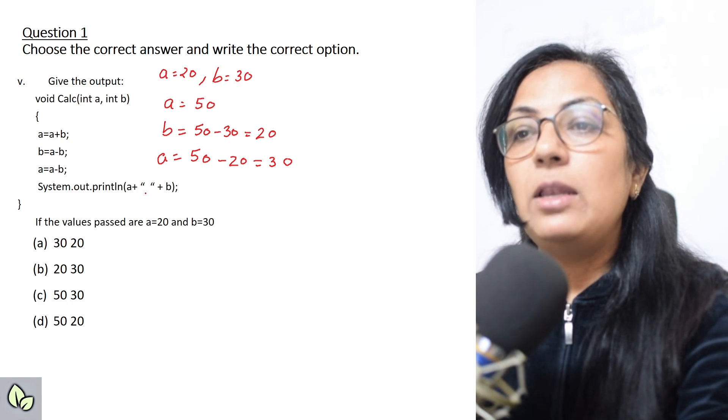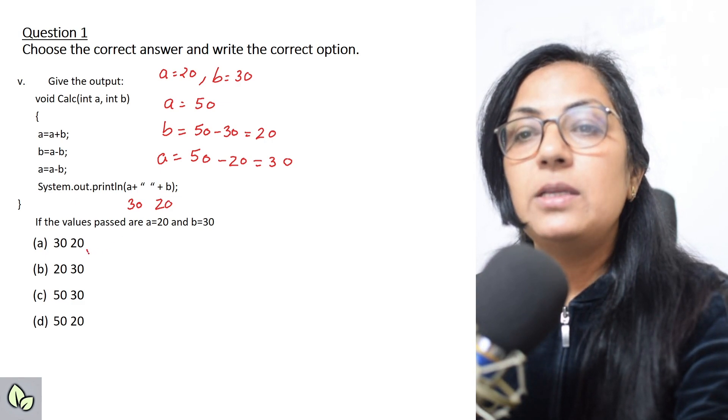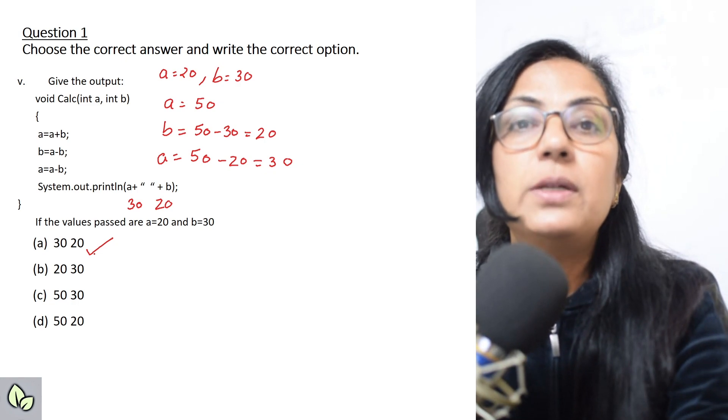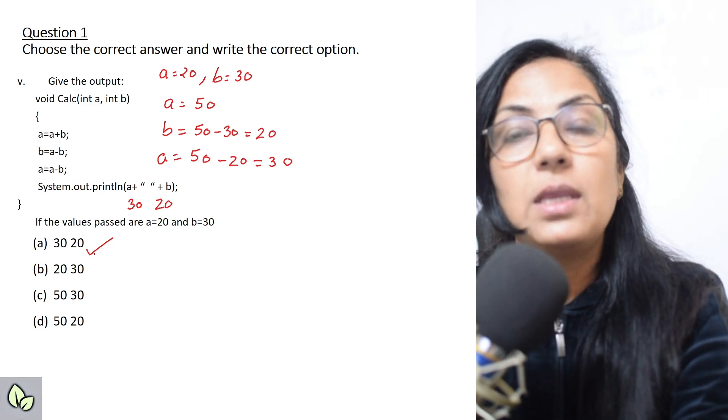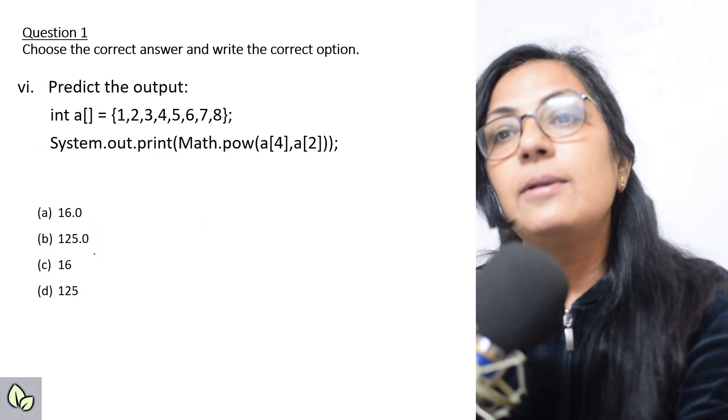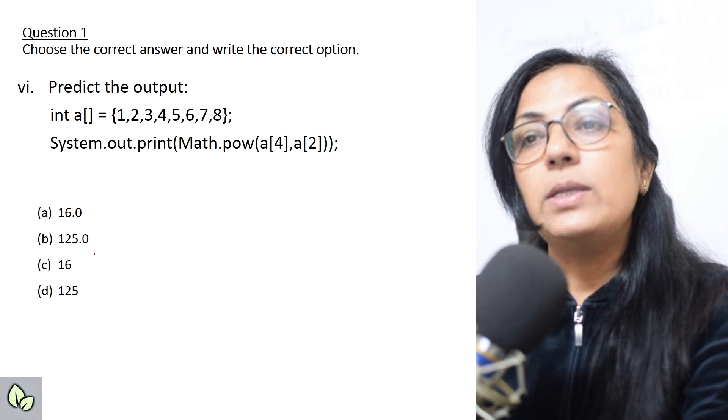a equals to a minus b. a is 50 and b is now 20, so it is 30. So your answer will be 30 space 20. Option a is the correct answer. I hope children these questions you are practicing, you are checking and getting the answer correct.